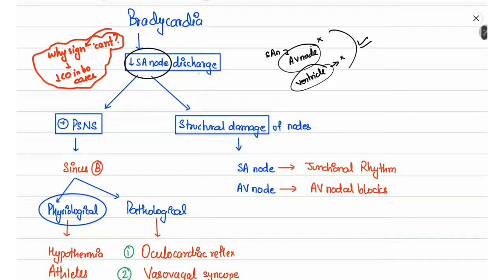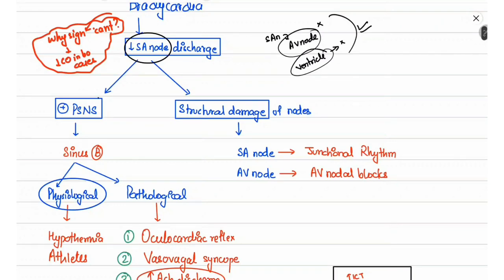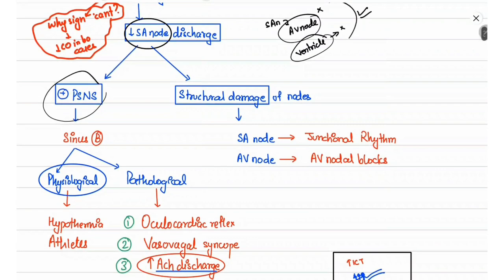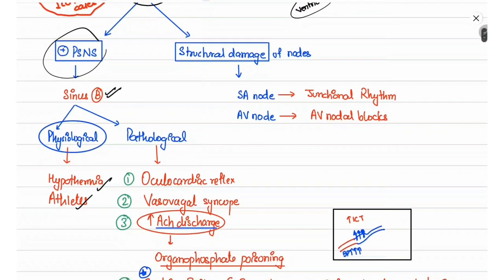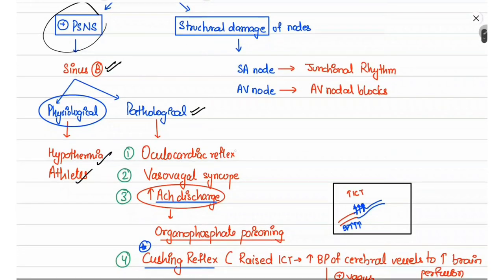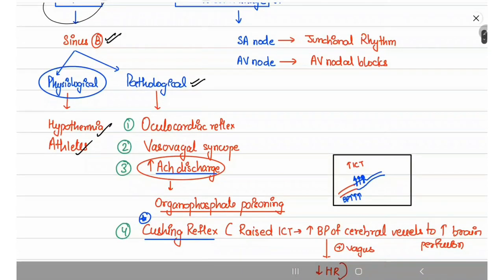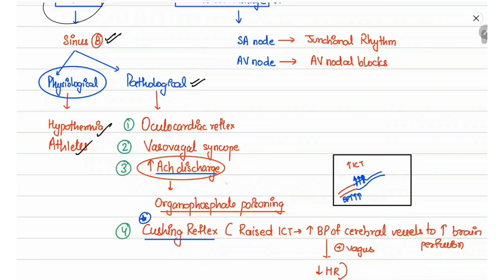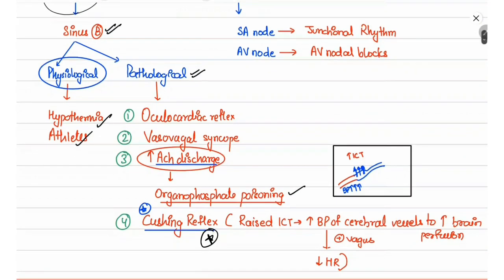Decreased SA node discharge, known as sinus bradycardia, can occur due to increased parasympathetic stimulation. This can occur in physiological conditions like hypothermia or in athletes. In pathological conditions, it can occur due to stimulation of the oculocardiac reflex, in vasovagal syncope, due to increased acetylcholine in organophosphate poisoning, or due to the Cushing reflex.